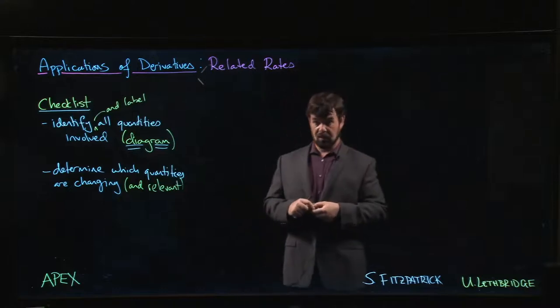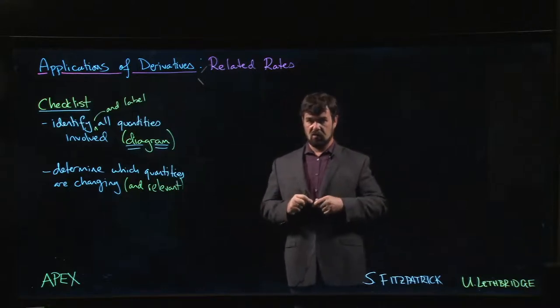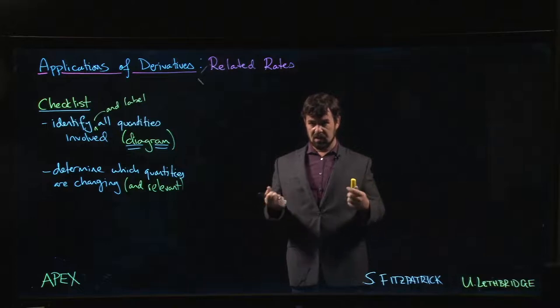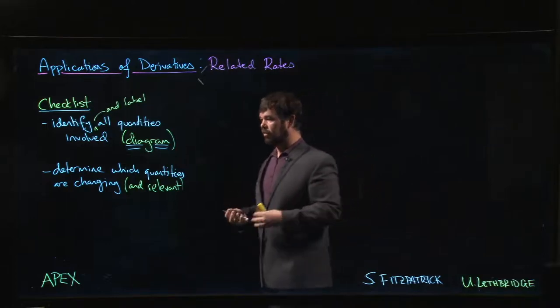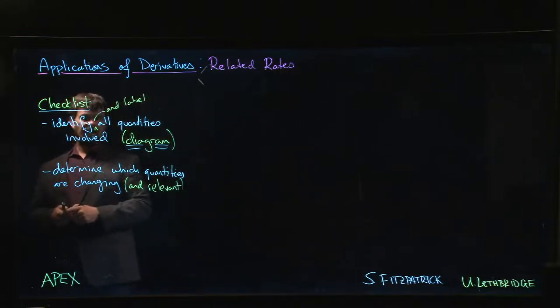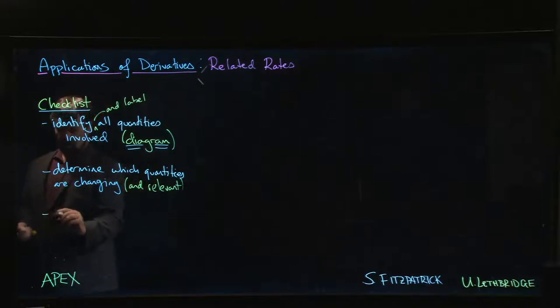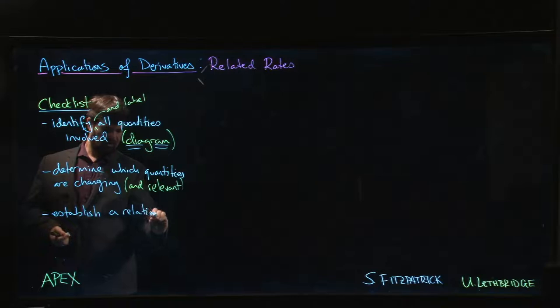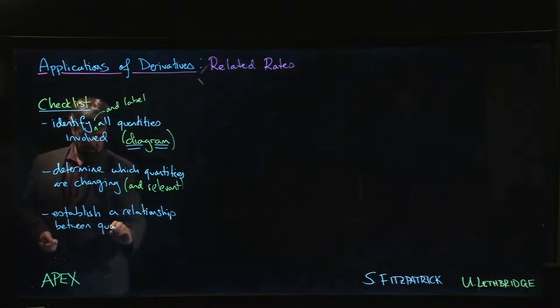We also need to know which things are relevant. It's entirely possible that a more challenging question might give you more information than you need, and it's your job to figure out what information is actually relevant. Once you've identified these quantities and figured out which ones are changing and which ones are relevant, the next thing you need is to establish a relationship between the quantities that are involved.